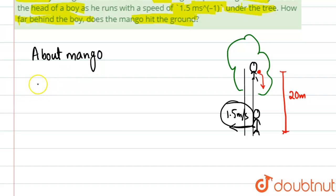So about mango, if we see, about mango, what we'll see: u initial velocity is basically zero. Initial velocity is zero. Acceleration is equal to g, and basically the s, which is the distance traveled, is 20 meters. And we have to find basically what is t.